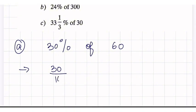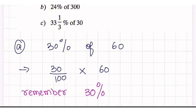And for question A, we're going to find out what 30% of 60 is. So 30% is basically 30 over 100 times 60. Remember this. So 30%, whenever it's a percentage sign, it's always going to be over 100.